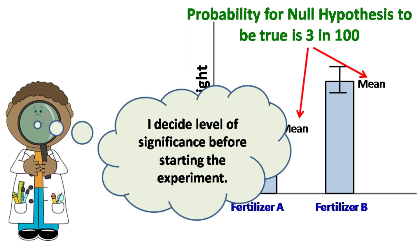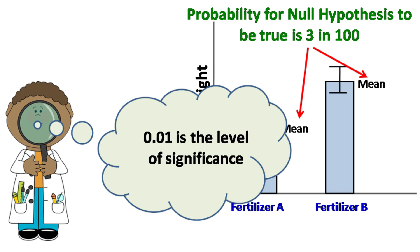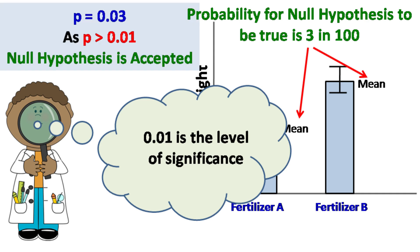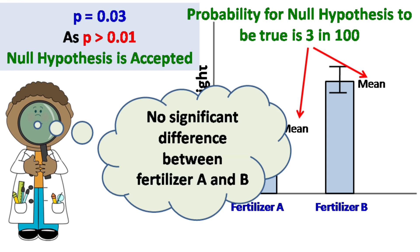Now let's say the level of significance decided by the researcher was 0.01. Then in this case, the researcher has to accept the null hypothesis and conclude that there is no significant difference between fertilizer A and fertilizer B.